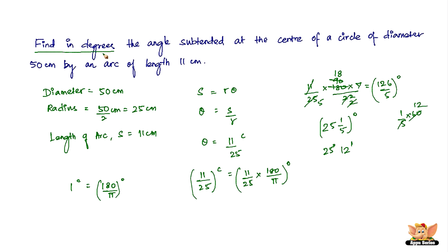So therefore in degrees the angle subtended at the center of this circle, which has got a diameter of 50 cm and an arc of length of 11 cm, is 25 degrees and 12 minutes. So this is theta in degrees. This concludes this problem as well as this video. I'll see you in further videos with more problems based on measurement of angles.